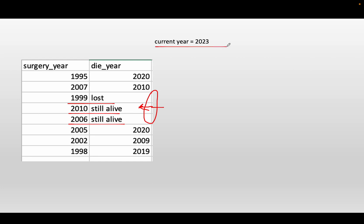The next step is to determine what year we stop the observation. Let's say this year is 2023, and we use this current year as the end of the observation. If the patient is still alive, we put 2023 in the die year column. This also applies to lost records — they are still counted as right-censored, so we also put 2023. We replace the 'still alive' and 'lost' entries with the year we stopped the observation.